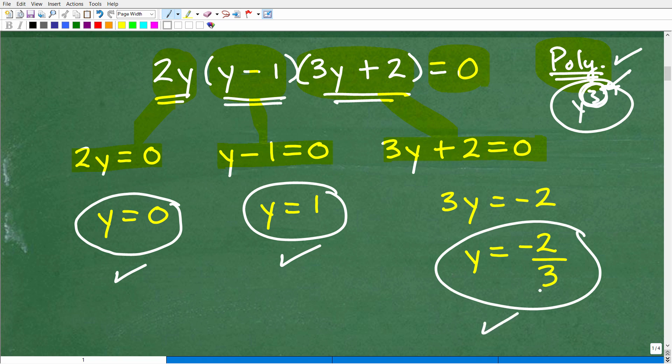So these are the three solutions to our polynomial, our third-degree polynomial equation. And because it's a third-degree polynomial equation, it has three solutions that could be real and/or imaginary. But in this case, we have three real solutions to this polynomial equation.